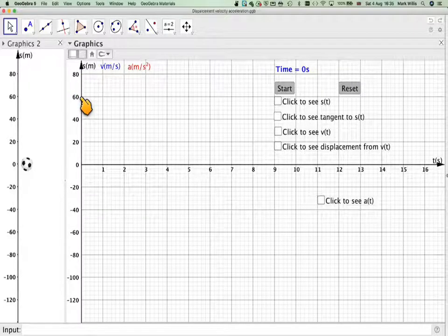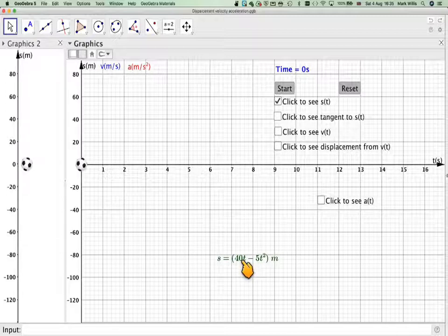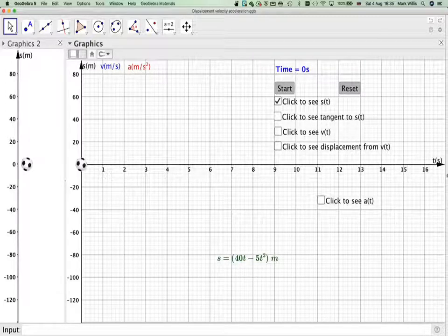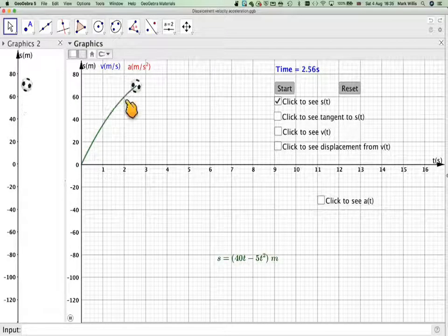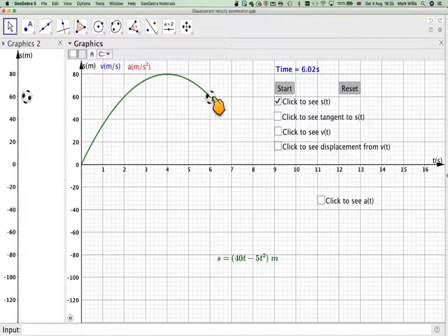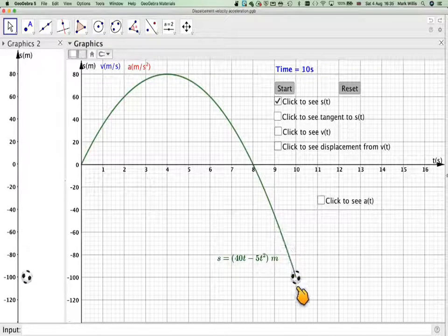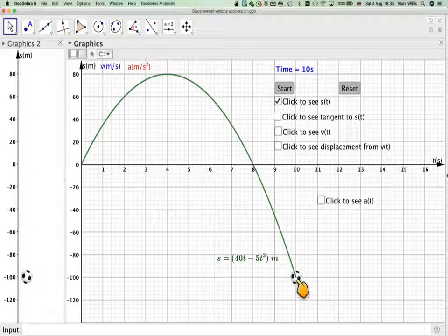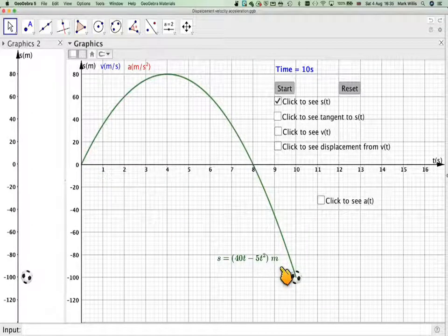First of all, we're just going to look at displacement against time. So if we click this, we will see the function given in the question, 40t minus 5t squared. And again, we'll start the animation. So the ball goes up, starts to slow down, gets to a maximum point and then goes down further, pass right down to like minus 100. So if the man's standing there, maybe the ball's hit the sea or something.